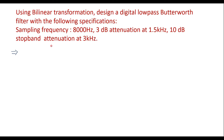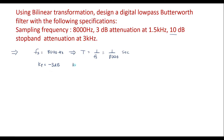First, let me write the given data. The sampling frequency FS is 8000 Hz. With FS we can calculate T, which is 1 over FS, that is 1 over 8000 seconds. The KP value is minus 3dB and KS value is minus 10dB. The pass band frequency FP is 1.5 kHz and the stop band frequency FS is 3 kHz.